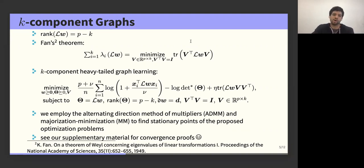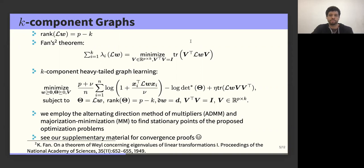We write down k-component graph learning as a non-convex optimization problem, and to find stationary points of this problem we rely on optimization frameworks such as the Alternating Direction Method of Multipliers (ADMM) as well as Majorization-Minimization. For the mathematical details around the derivations of these algorithms, please refer to our manuscript and the attached supplementary material.